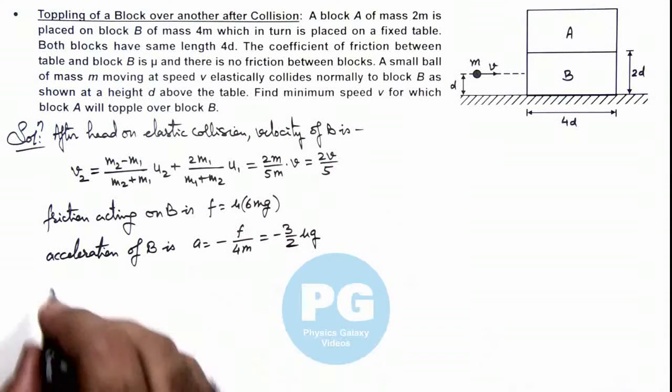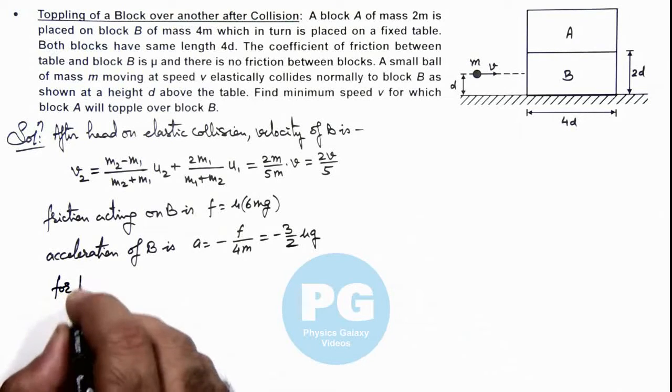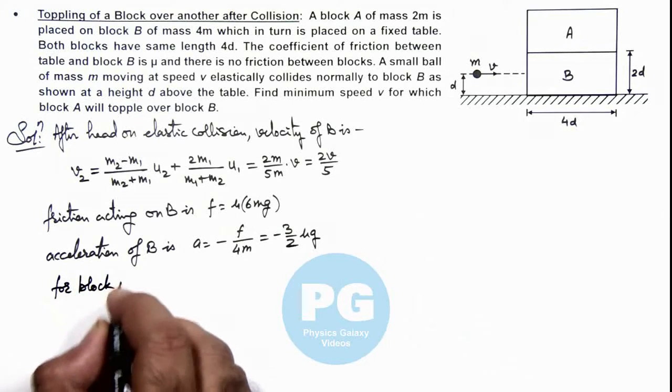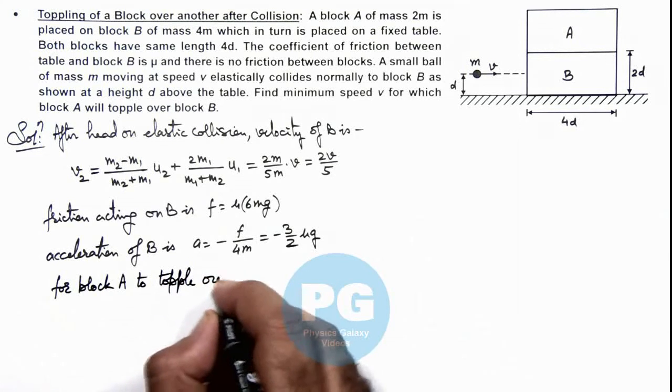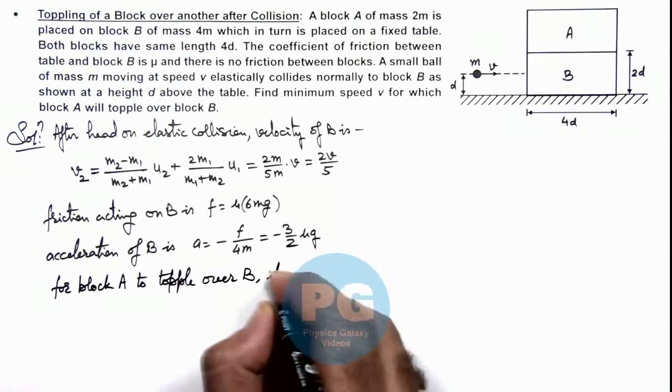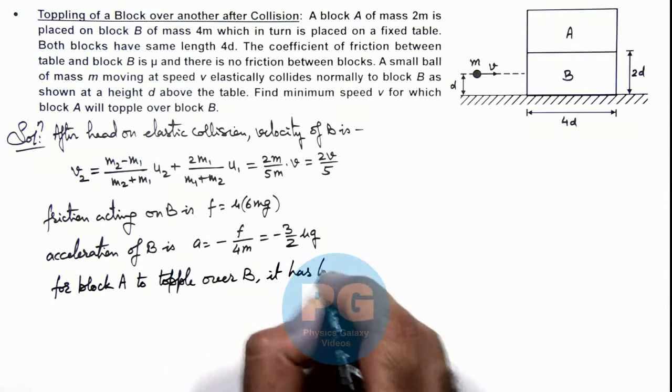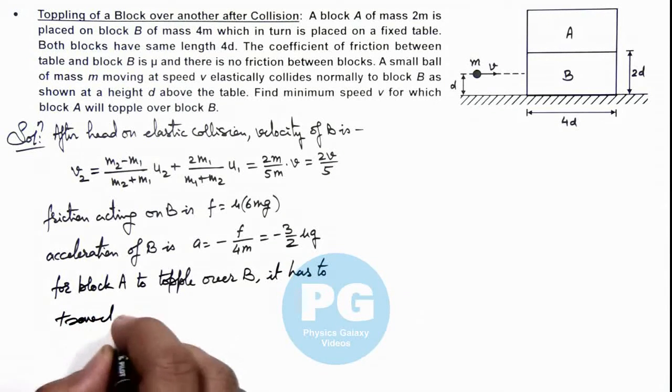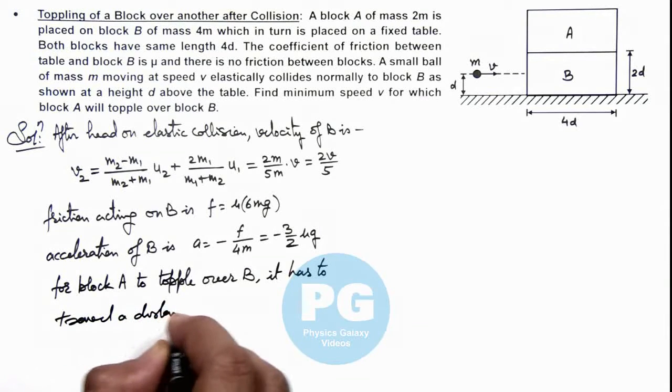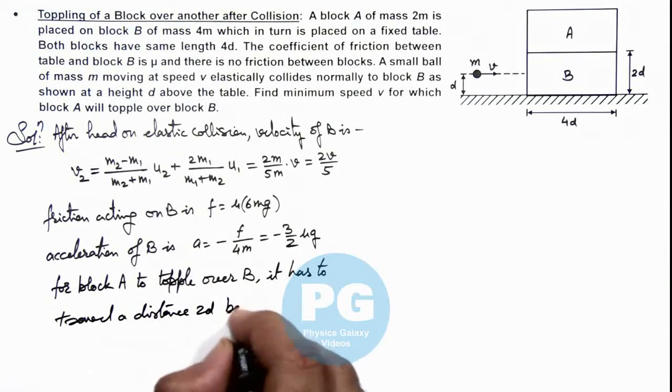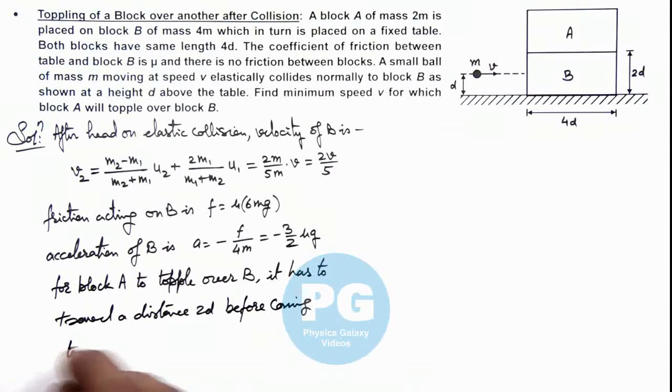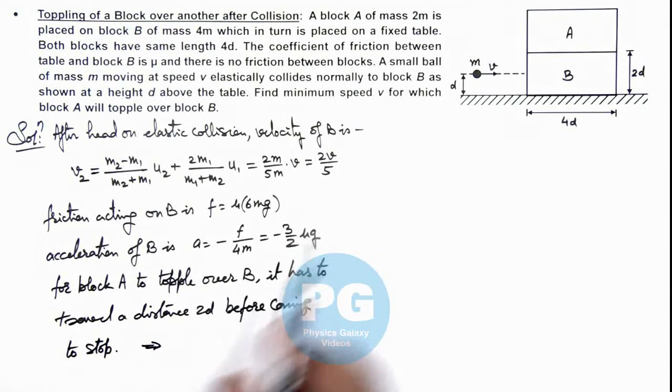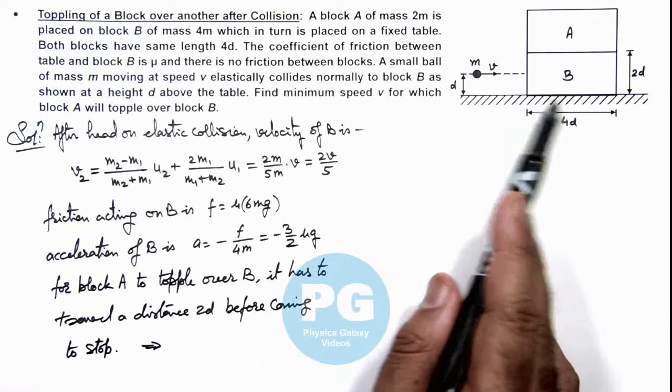So we can write now for block A to topple over B, it has to travel a distance 2d before coming to stop. This implies here we can write the distance travelled by B is 2d after which it will come to rest.